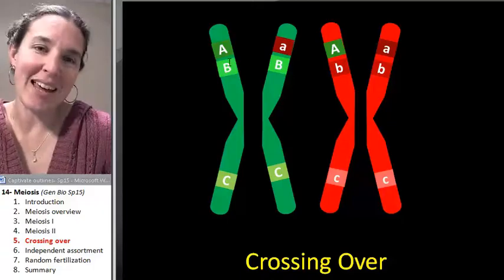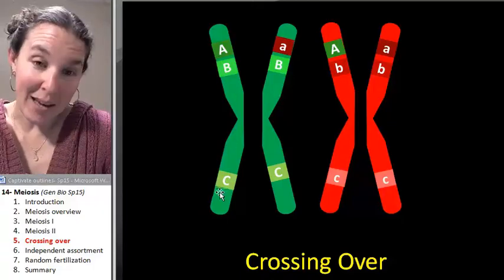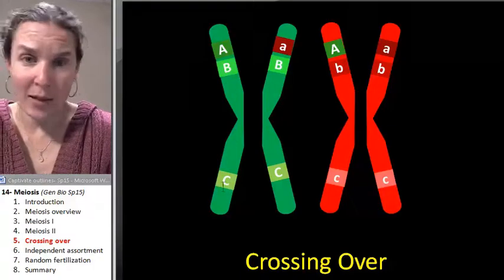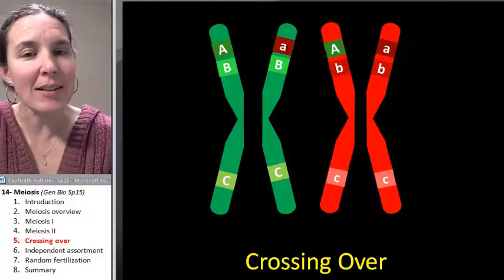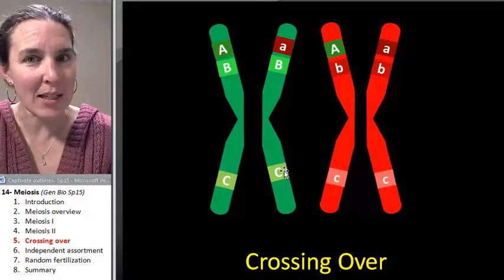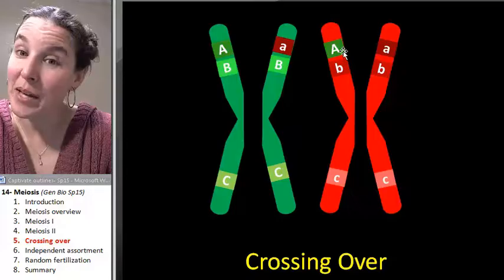And then you can see that one gamete has all big letters. The other one has a little A and a big B and a big C. The other one has a big A, a little B, and a little C.